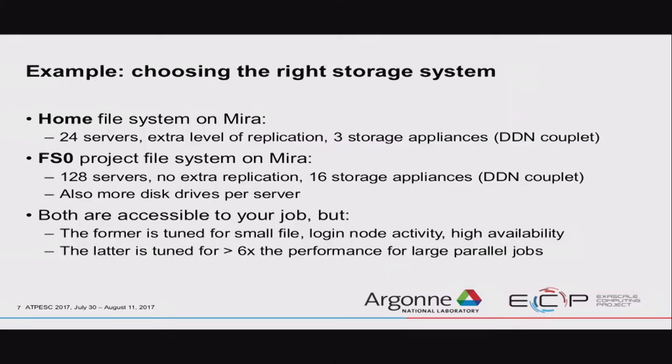To give an example of why this is important — on Mira, the home file system has 24 servers connected to three big storage appliances. That sounds like a lot, but the project file system has 128 servers, less replication (which means it's faster), and many more hard drives and storage appliances attached. Simply using the project file system instead of your home directory will get you at least six times the performance in theory, depending on how you're using it. So you want to be using the right resources at your disposal.